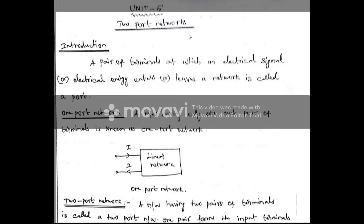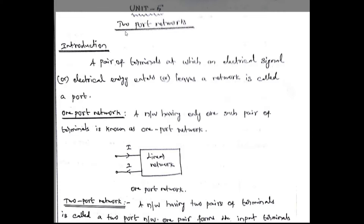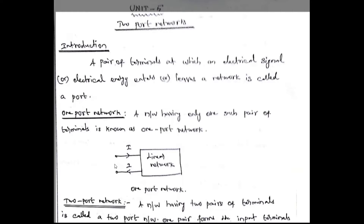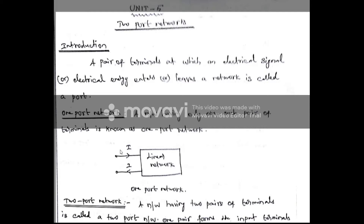In this video we are going to see the topic two-port network. First you should know what a port means. A port is nothing but a pair of terminals at which an electrical signal or electrical energy enters or leaves a network. For a linear network, we may give some input voltage and take some output voltage from some terminals — such a terminal pair is called a port.